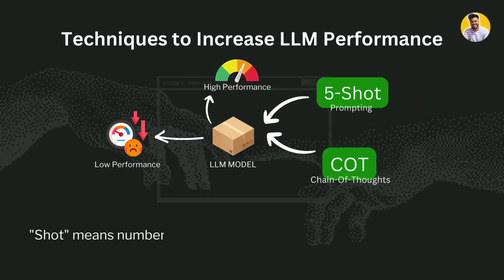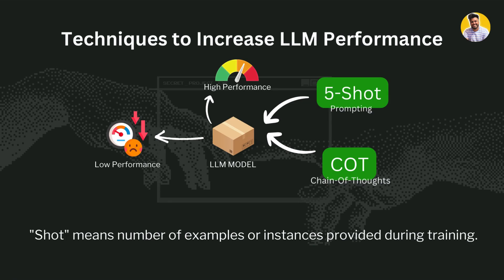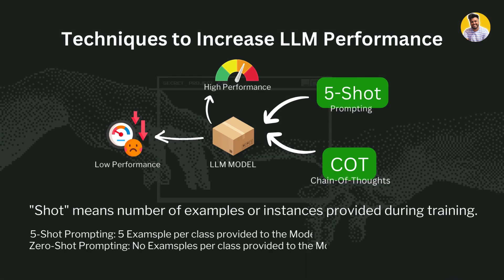The term 'shot' in the context of machine learning refers to the number of examples provided during training. For example, in a few-shot learning scenario, a model is trained on a small number of examples per class. A number such as 5-shot would indicate that the model is trained on only 5 instances of each class.